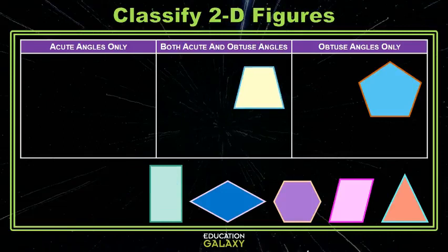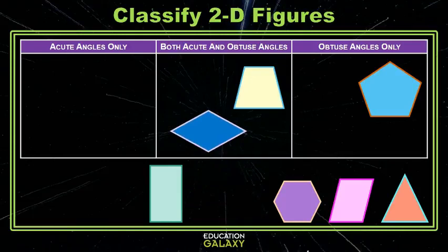The rectangle has all right angles. There's no category for that, so it will stay where it is. The parallelogram appears to have two obtuse and two acute, so that's sum of each.